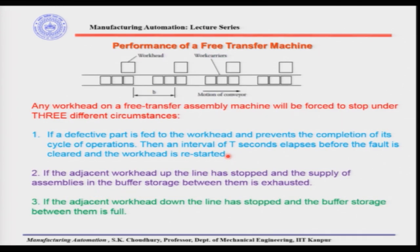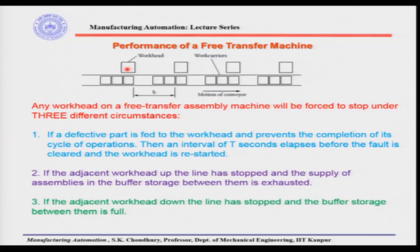Now, having covered the indexing machine, let us look at the free transfer machine. In the free transfer machine, the output will always be greater because one machine stoppage will not affect the other machines working, since there is a buffer stock in between. An analysis can be made to show that even for a minimum buffer stock, the free transfer machine will always have greater output compared to indexing machines.